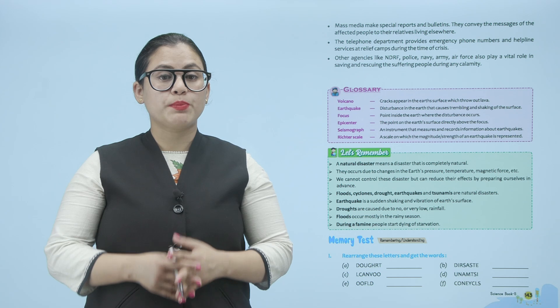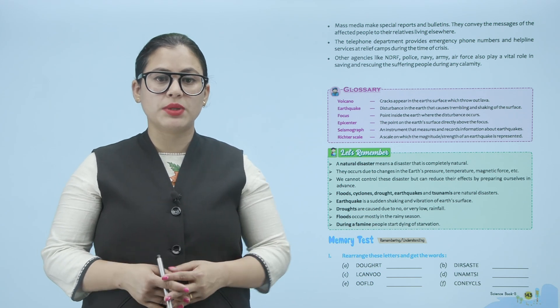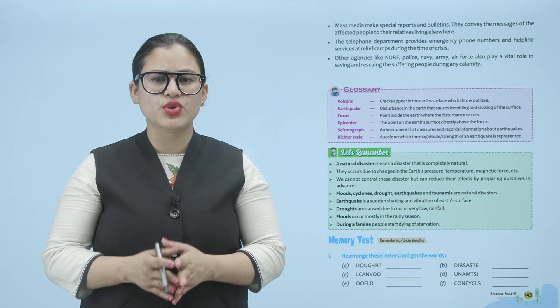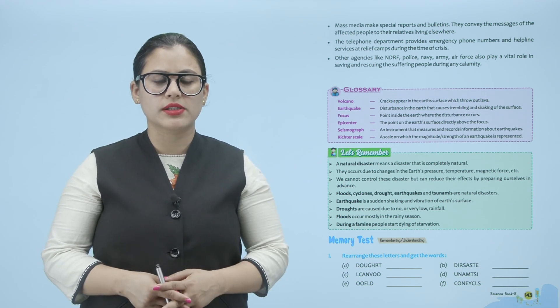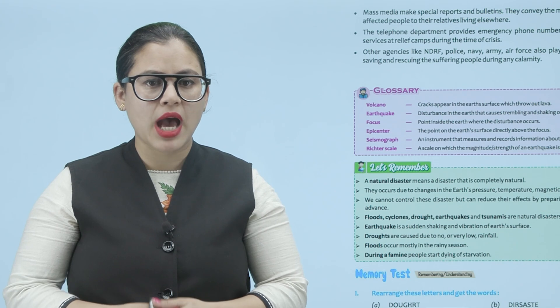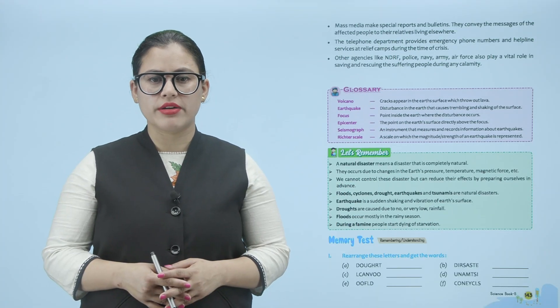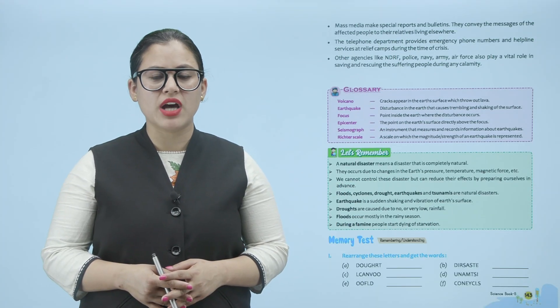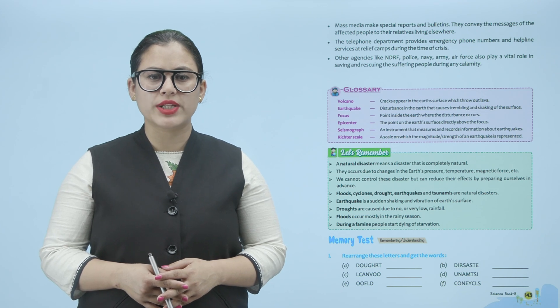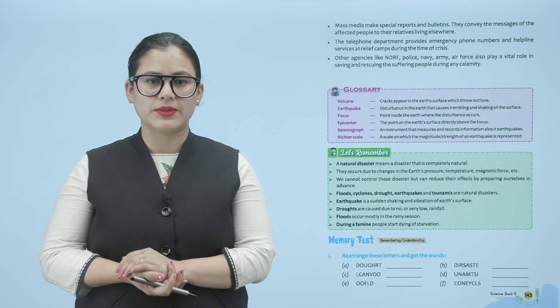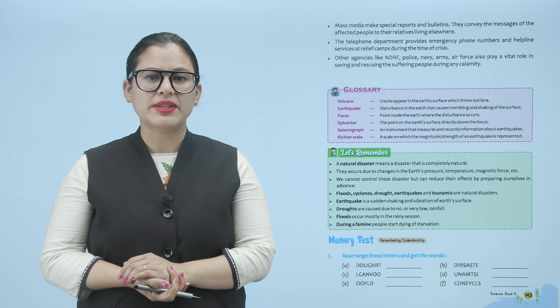Mass media make special reports and bulletins and convey the messages of affected people to their relatives living elsewhere. The telephone department provides emergency phone numbers and helpline services at relief camps during the time of crisis. Other agencies like NDRF, police, navy, army and air force also play a vital role in saving and rescuing the suffering people during any calamity.